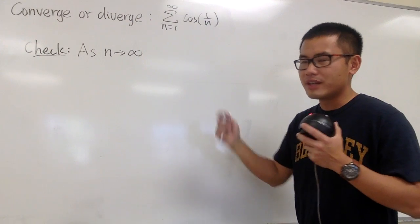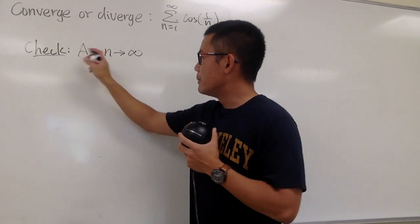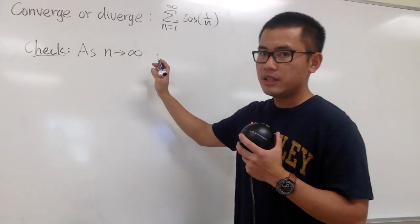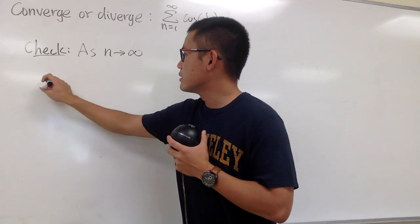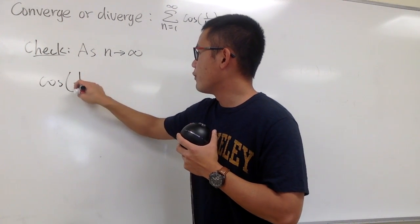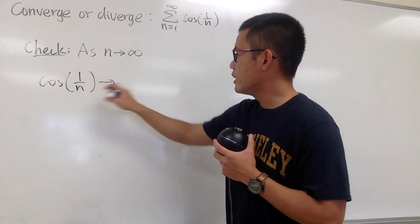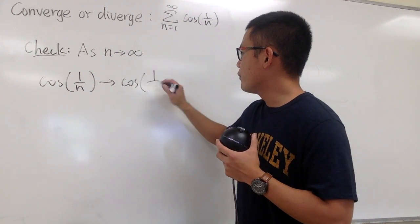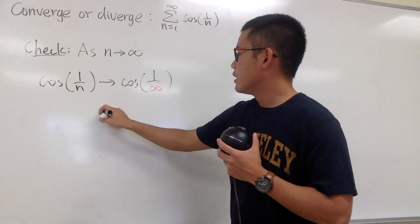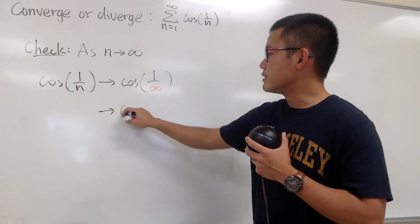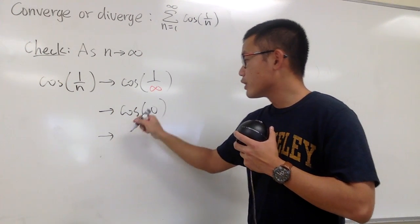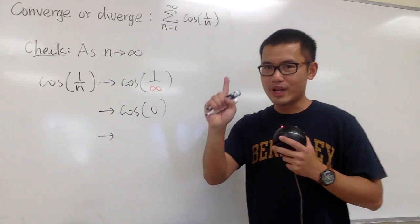What is cosine of 1 over n? I'm not using L'Hopital's rule. I'm just going to check as n goes to infinity of that. Let me write it down. Cosine of 1 over n. And this right here, we approach to, I can plug in infinity here. Cosine of 1 over infinity. I know 1 over infinity is 0, so I can put down cosine of 0 right here for you guys. And cosine of 0 is equal to what? 1.